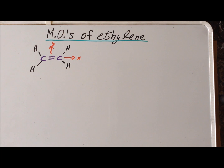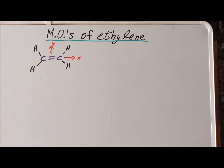Hello. In this video, we are going to derive the sigma and pi molecular orbitals of ethylene, C2H4.